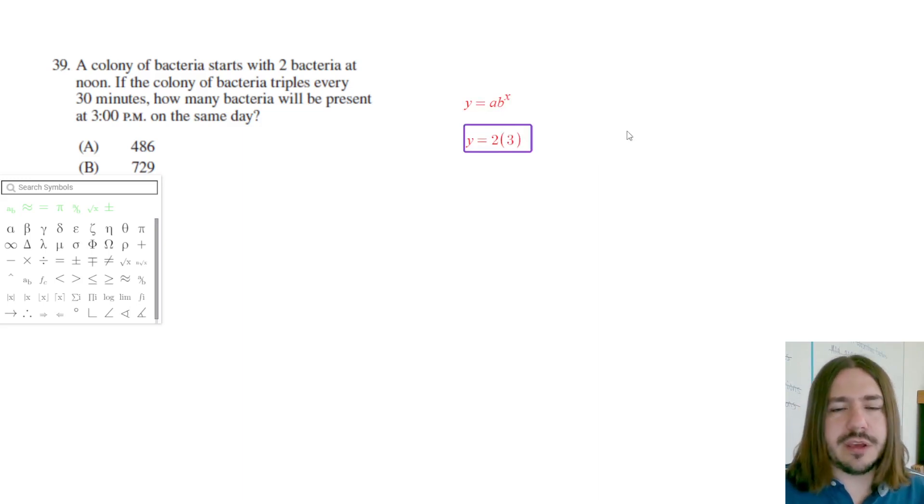Figure out how many increments of 30 minutes are there between noon and 3 p.m. So that's three hours, right? And so since every hour is 60 minutes, that's going to be a total, we did start at noon, right? Noon to 3 p.m., so three hours, that's going to be a total of six triplings.